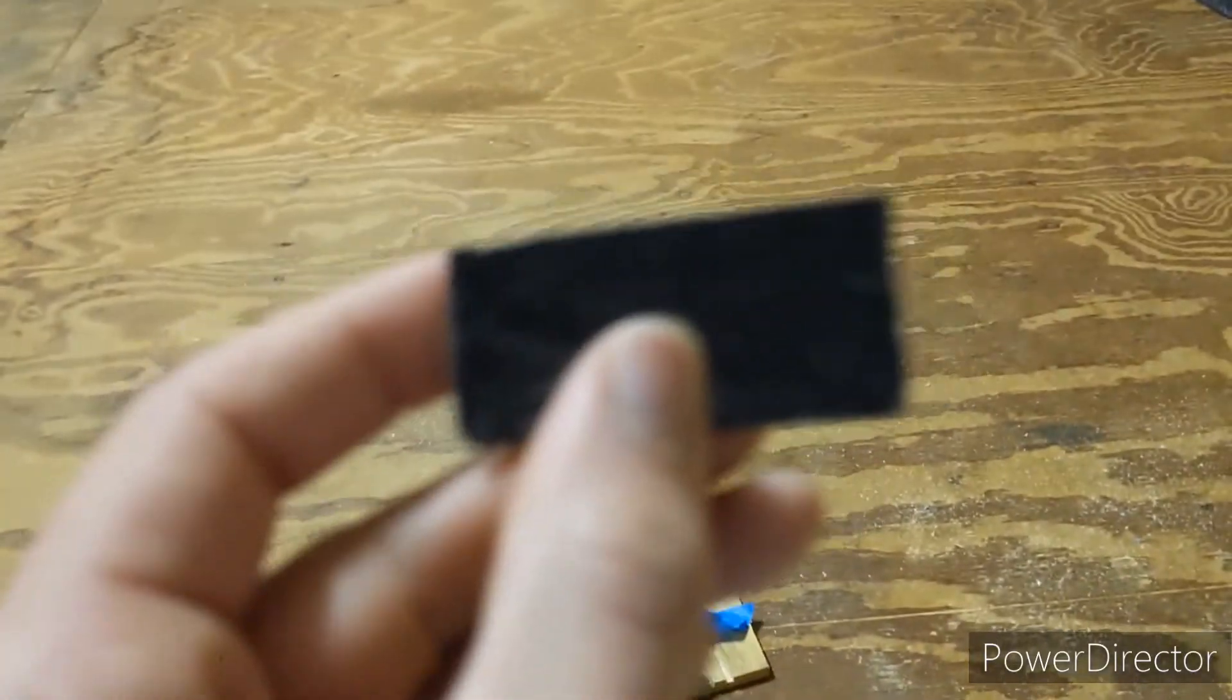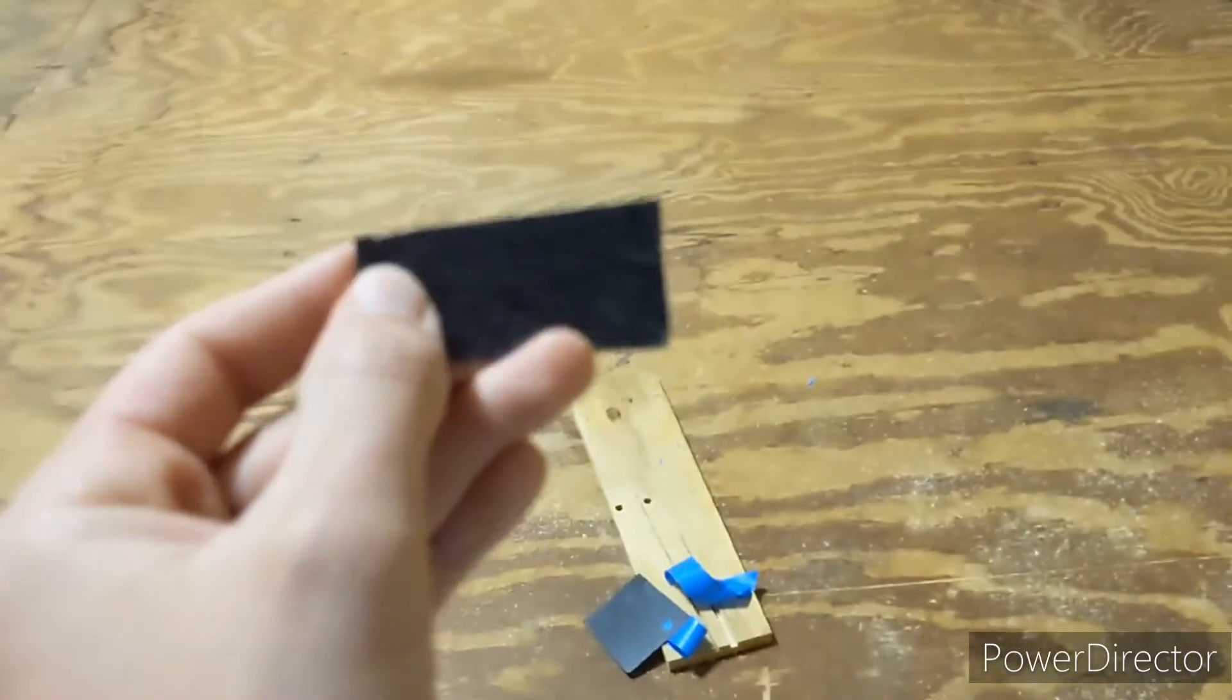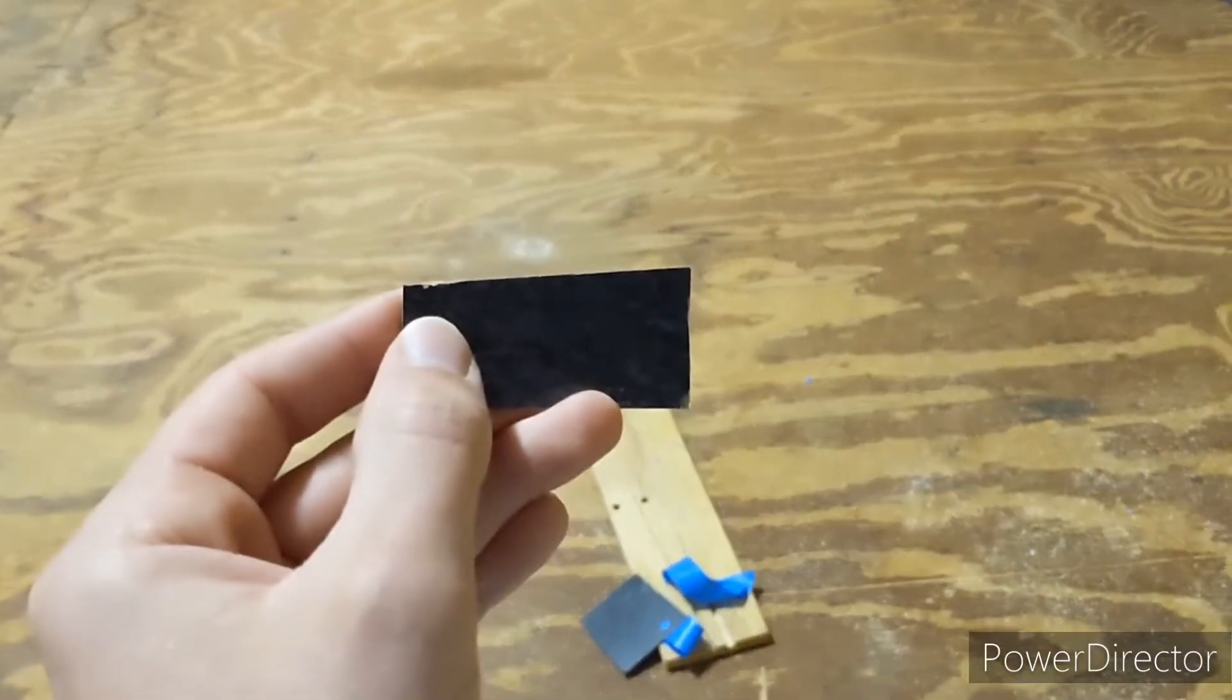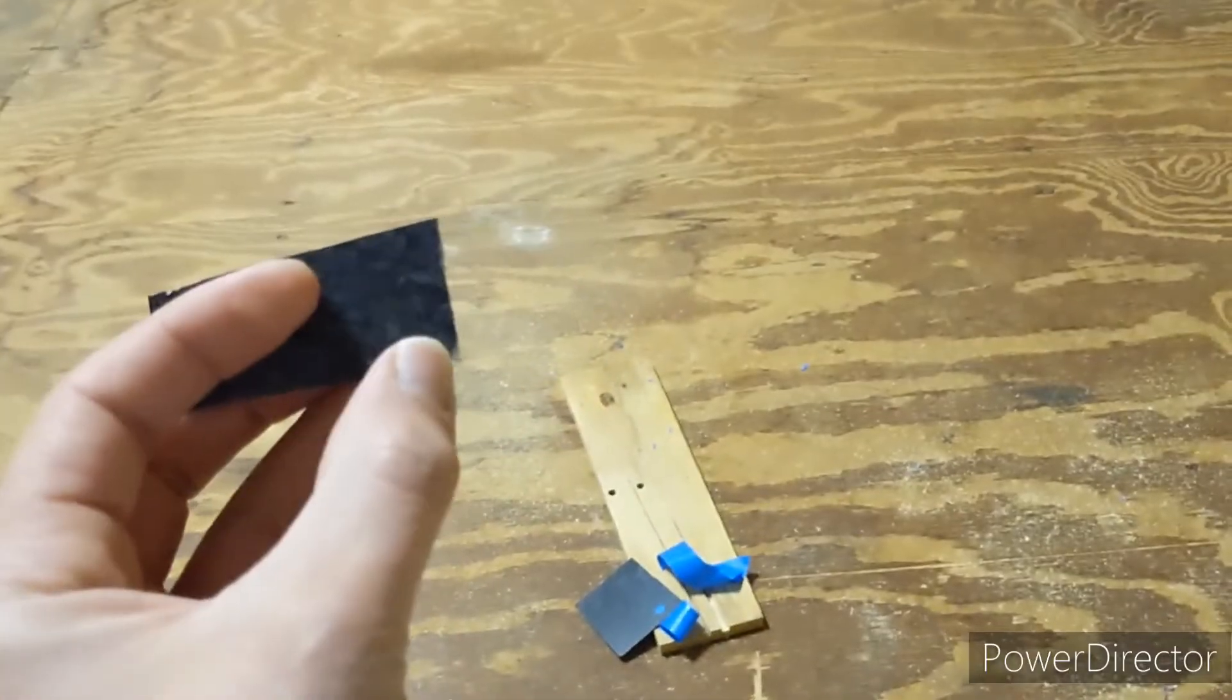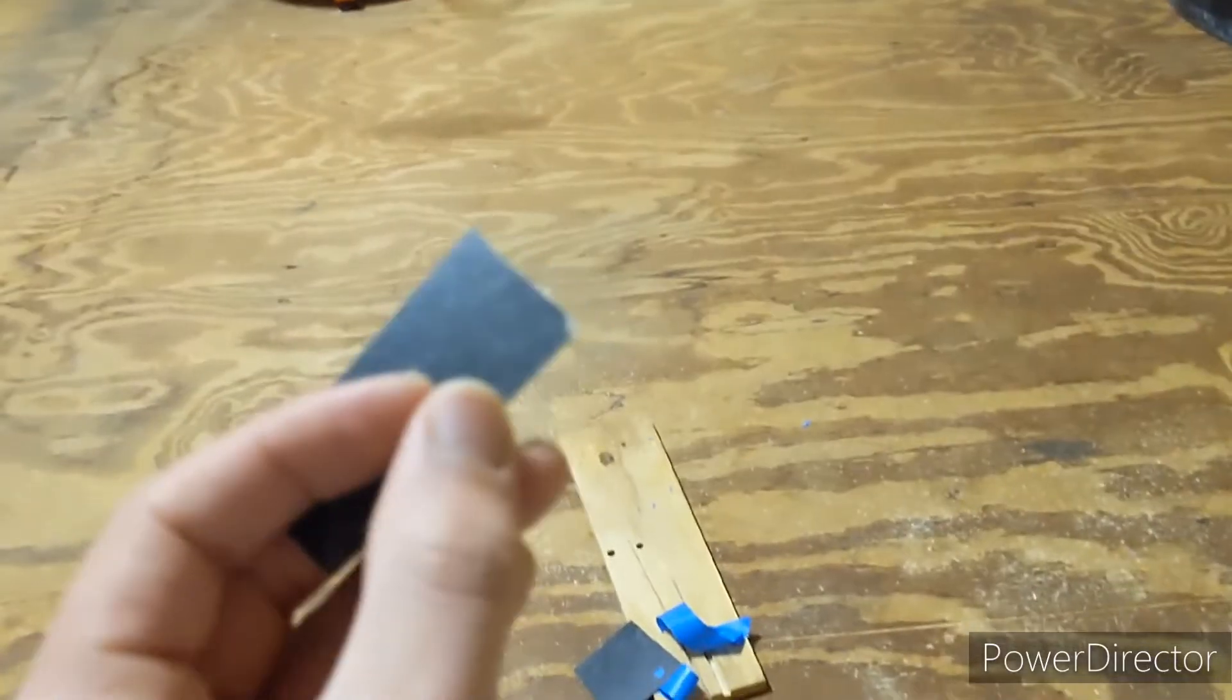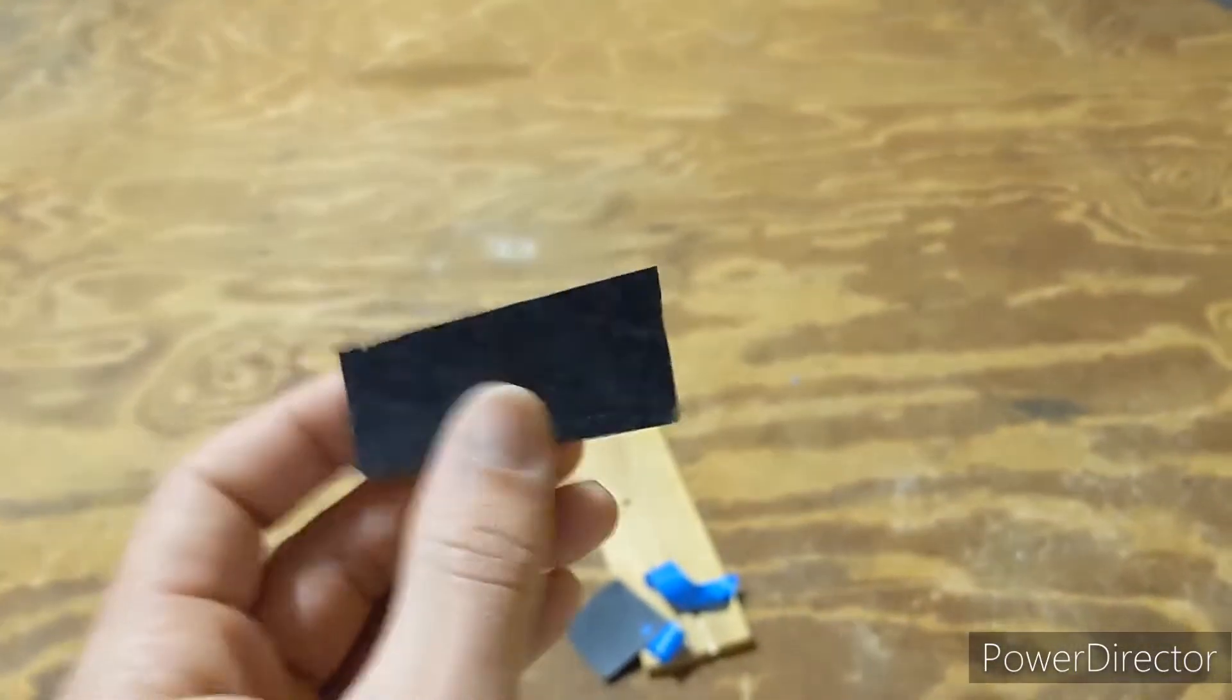It looks a ton better. You can still see there's a small little chip right there if my camera will focus on it, but it's a lot smaller than this chip that we had initially. This is definitely the method I'm going to be using.